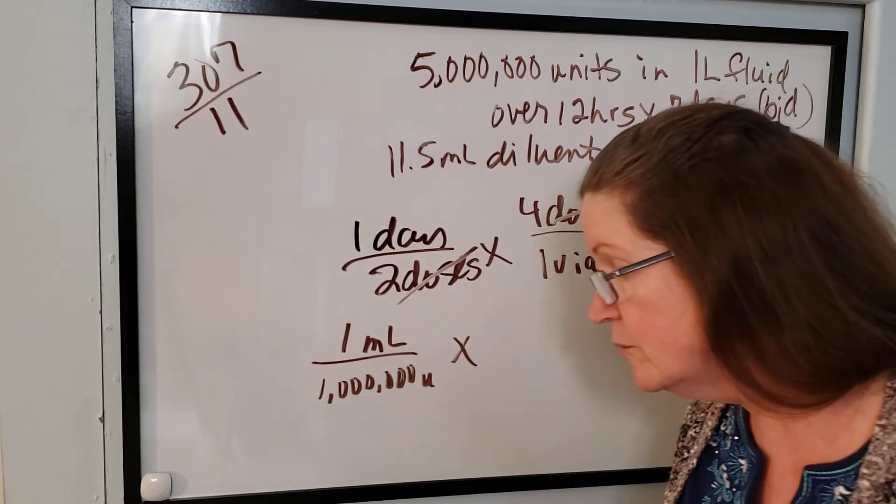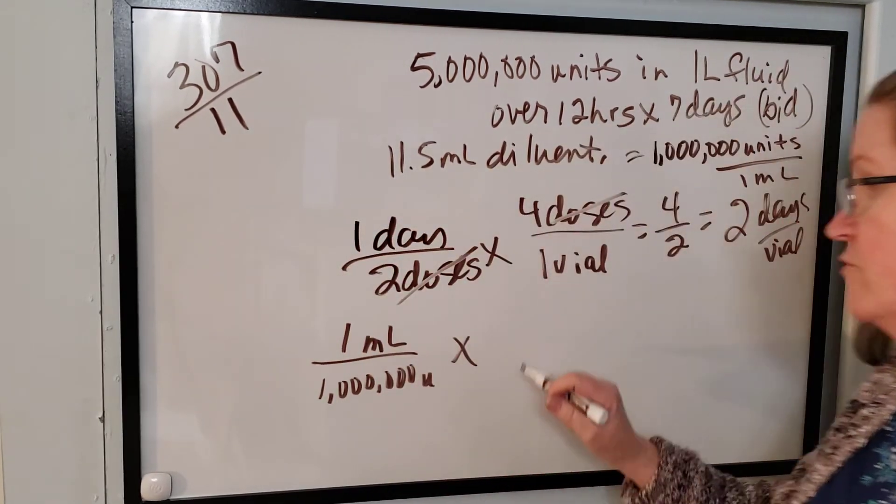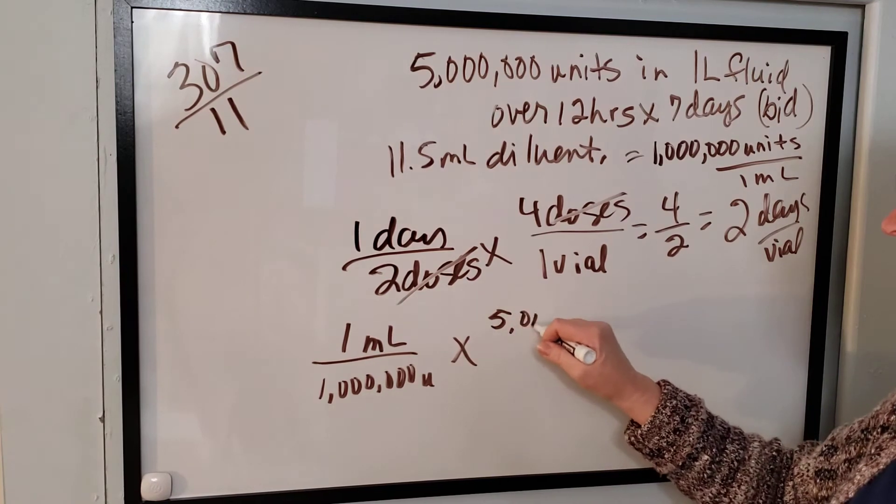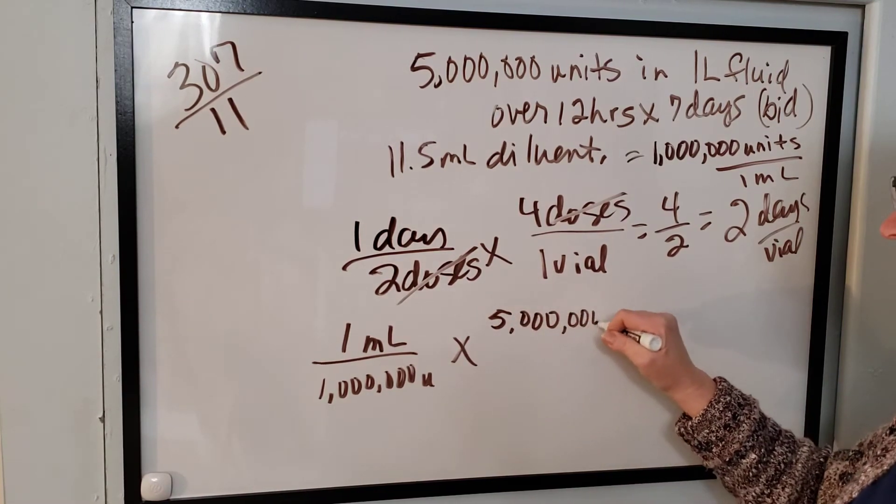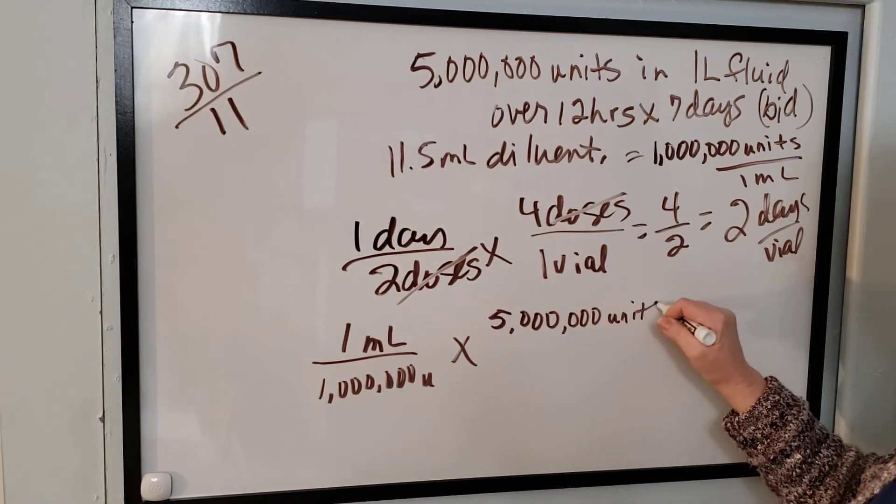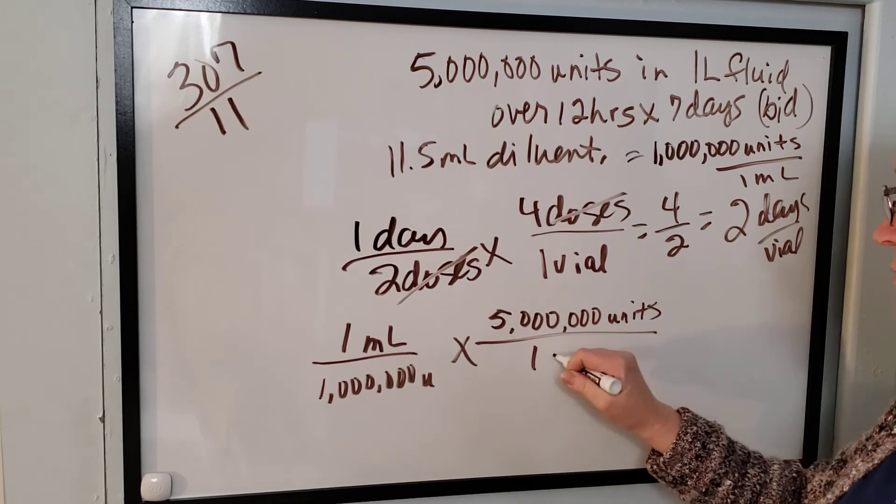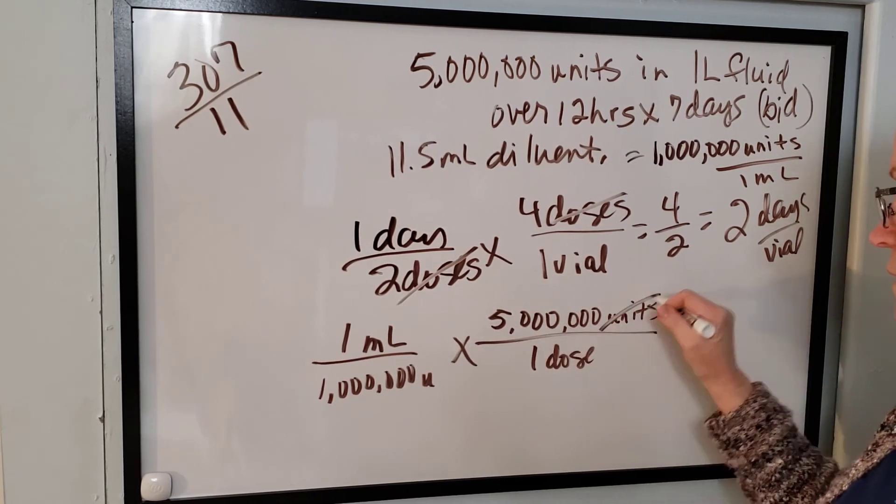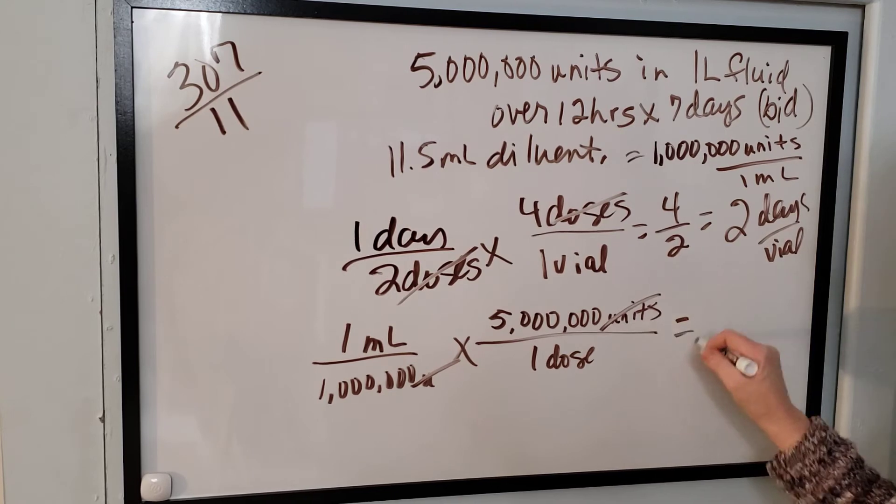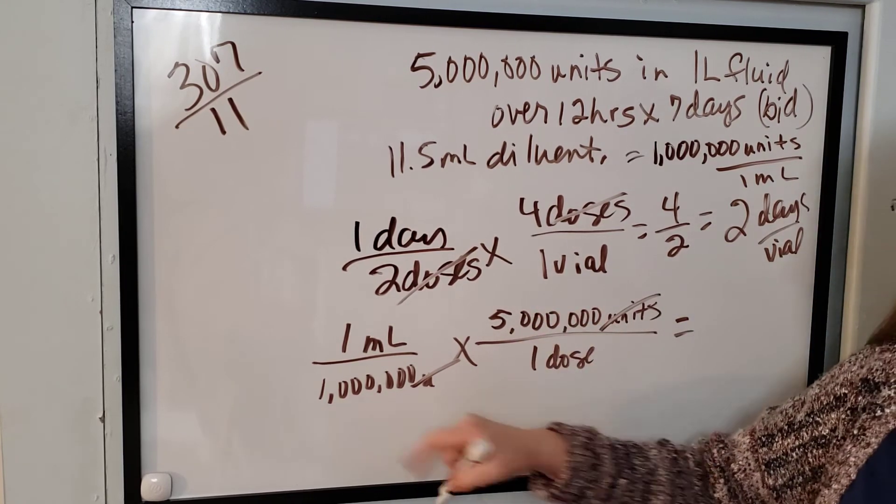And we want to give the patient five million units. Okay? Per dose. The units cancel. So you have five million divided by one million. It gives you five mls should be added to the bag. And they're adding it to a one liter bag. And then, now this is something that nurses sometimes do as well as pharmacy technicians.